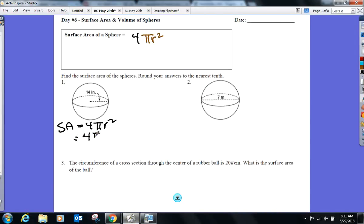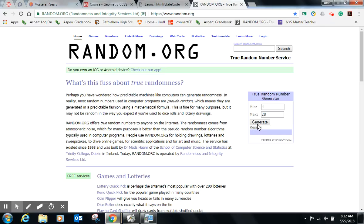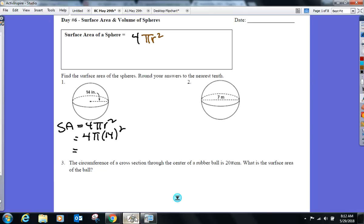14. So 4 pi, 14 squared. And according to the directions, we're going to round everything to the nearest tenth. When you're ready, nearest tenth. Let's go 24. 2463.0. Be careful today. Be on your toes. What did we just find in the sphere? Surface area. So I'm not going to put inches cubed, but inches squared.